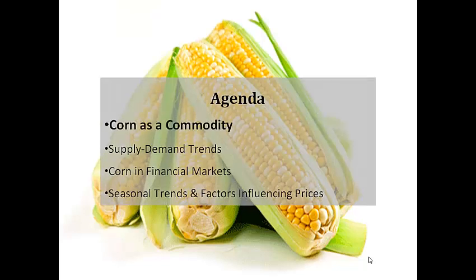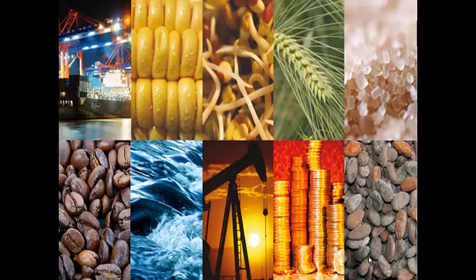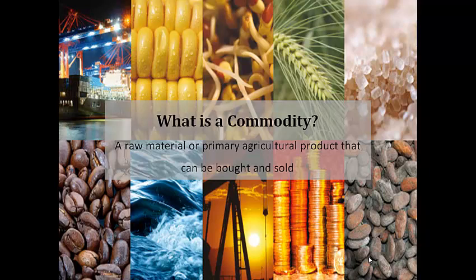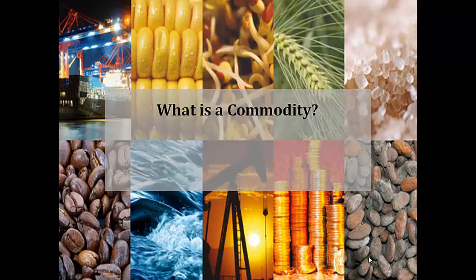Firstly, Corn as a Commodity. What is a commodity? In short, it is a raw material or primary agricultural product that can be bought and sold. Raw materials include metals such as gold, silver, aluminium and zinc. Energy goods such as crude palm oil, Brent oil and natural gas. And agricultural products such as corn.